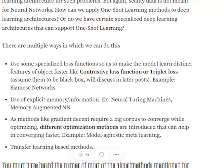We can also use some sort of explicit memory or information. When we have very scanty data, we can incorporate prior information into the model, which can help in performing one-shot learning methods.